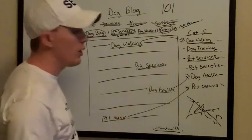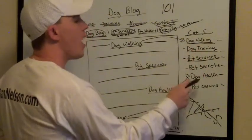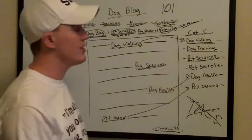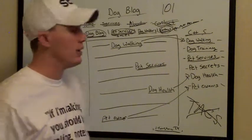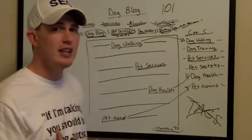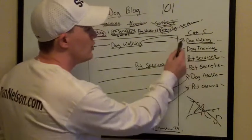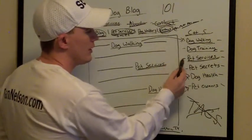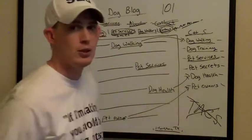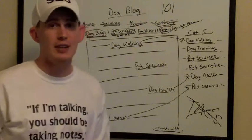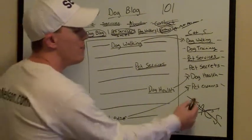The second thing you're going to want to do is go in and identify keywords and topics that are going to be your categories. You don't want to have hundreds and hundreds of categories. You want to really narrow your niche down and figure out exactly what you're trying to target. So: dog walking, dog training, pet services, pet secrets, dog health, and pet owners — that's what I'm trying to target if I'm a dog walker.